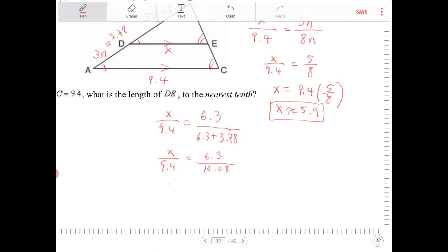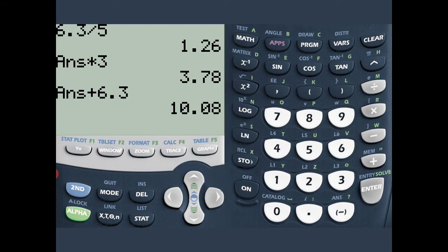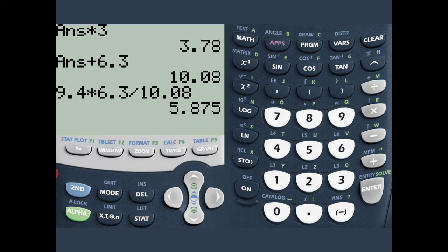I'm going to cross multiply both sides by 9.4. So, 9.4 times 6.3 all over 10.08. 9.4 times 6.3 divided by 10.08. And you can see here we end up in the same answer, 5.875.